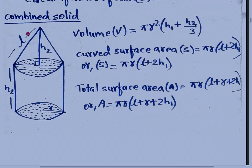Now here combined solid — combined solid means the upper part is a cone and the lower part is a cylinder. The cone and cylinder are both combined to form a single figure.